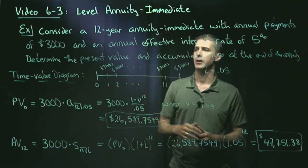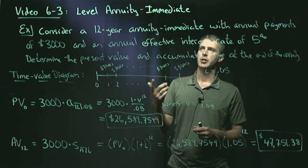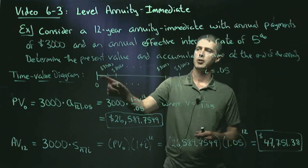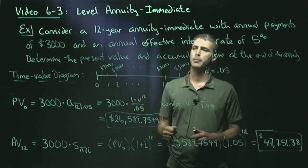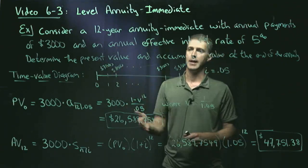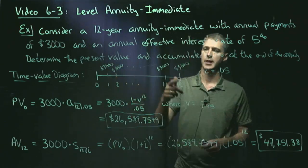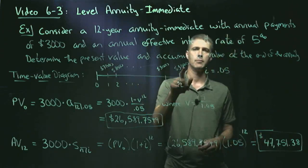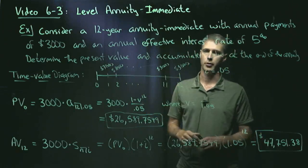Here's the time value diagram. Since it's an annuity immediate, the first payment occurs at the end of the first period, so at time one year. Second payment at the end of the second year, time two, et cetera. So the 12th and final payment will occur at time 12, the end of the 12th year.